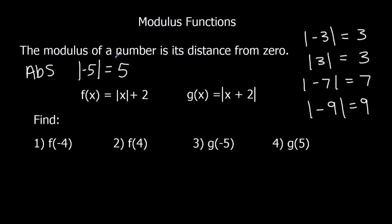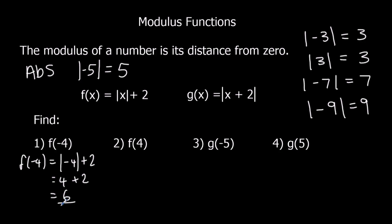We've got f(x) = |x| + 2 and g(x) = |x + 2|. For f(−4), we substitute negative 4: the modulus of negative 4 is 4, so 4 plus 2 is 6. For f(4), the modulus of 4 is 4, so 4 plus 2 is also 6. If you put 4 or minus 4 in, it gives you the same thing, because the modulus of minus 4 and the modulus of 4 are both 4.